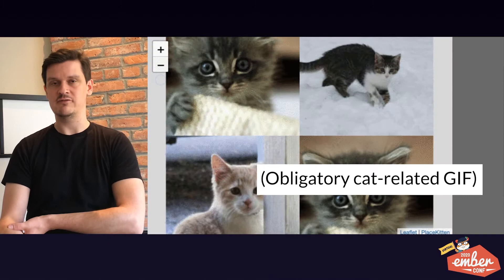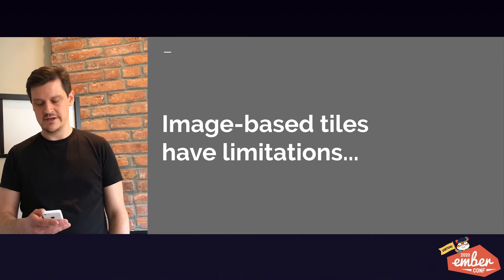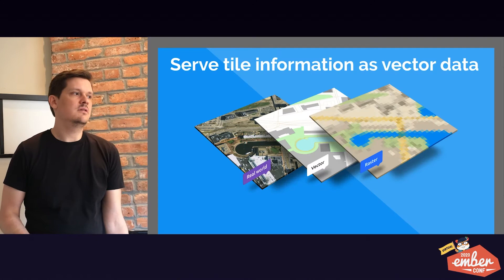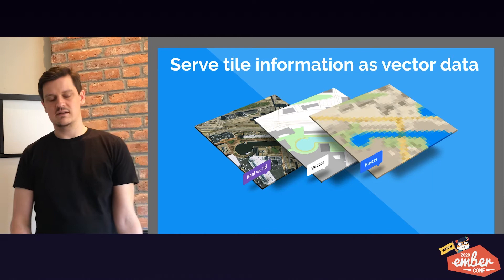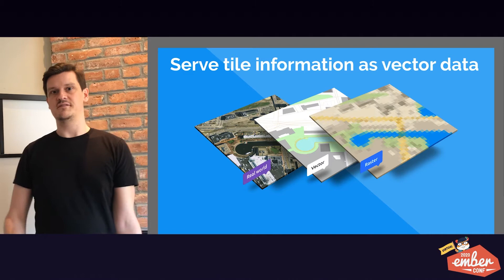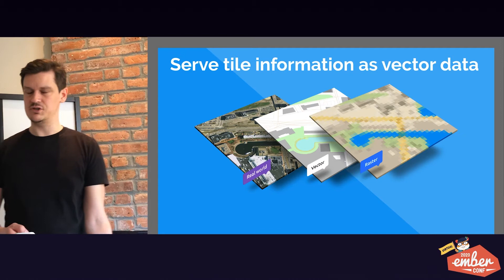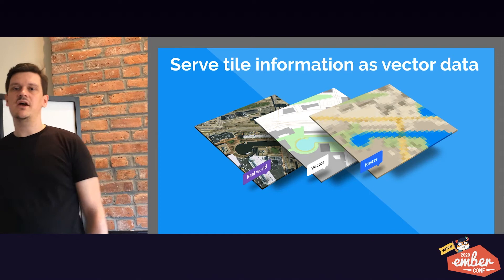Image-based tiles have limitations. An image tile must be generated on a server and has limited interactivity — you can't actually do on-the-fly styling. As a solution to that, you can now serve tile information as vector data. That means we have dynamic interactions — we can change coloring, style, and zoom.